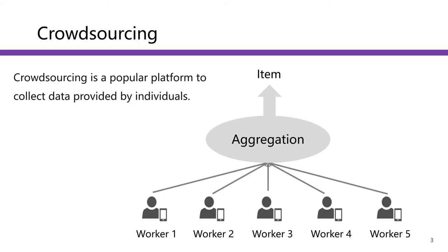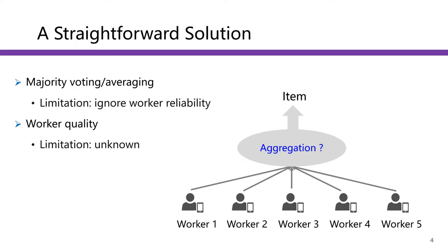Crowdsourcing is a popular platform to connect data provided by individuals. In crowdsourcing systems, each worker provides a value for a given item. This value could be numerical data or some category labels. The server in crowdsourcing systems then uses some aggregation approach to estimate an aggregated value for this item using the data provided by workers. The key challenge in crowdsourcing is how to aggregate the data provided by workers. A straightforward approach is majority voting or taking the average of the collected data. The drawback is that it treats all the workers equally, and it is important to take the quality of workers into consideration. However, the workers' quality is usually unknown in practice.